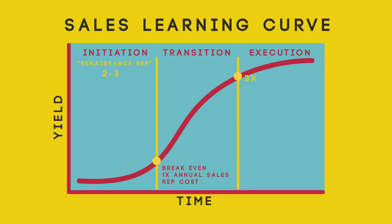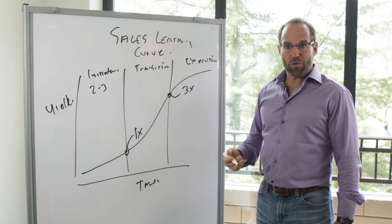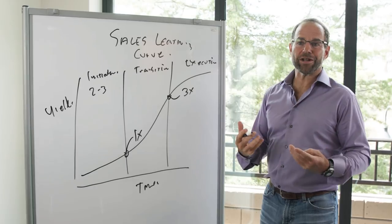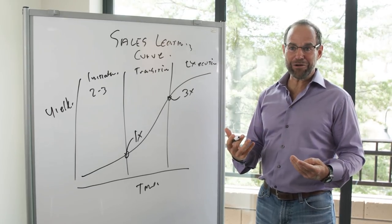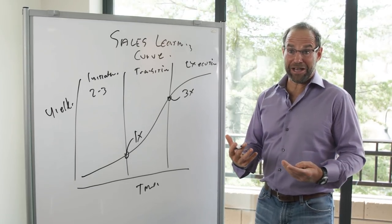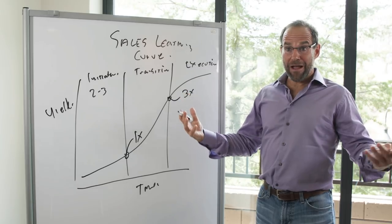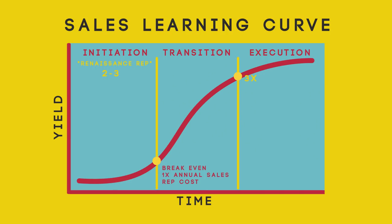We get into the execution phase when this is three times the loaded cost. Why 3x? A salesperson and sales organization not only has to cover their own costs, but has to cover the revenue for the entire organization. A very productive company is probably 5x. When we think about quotas and commission rates, typically you want to be anywhere from 3 to 5x in the execution phase.